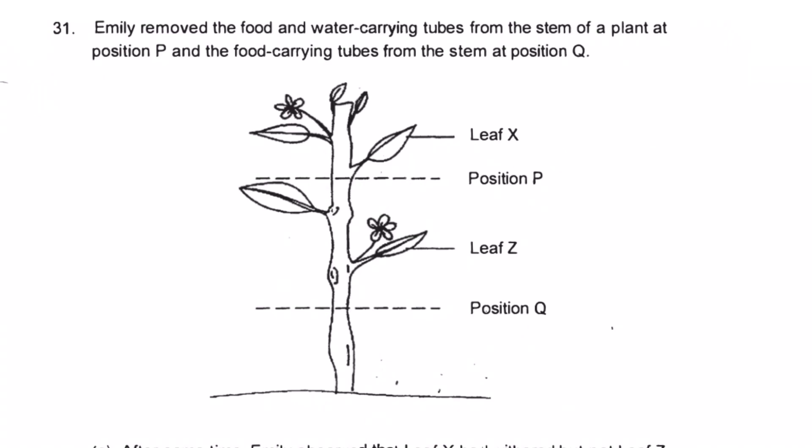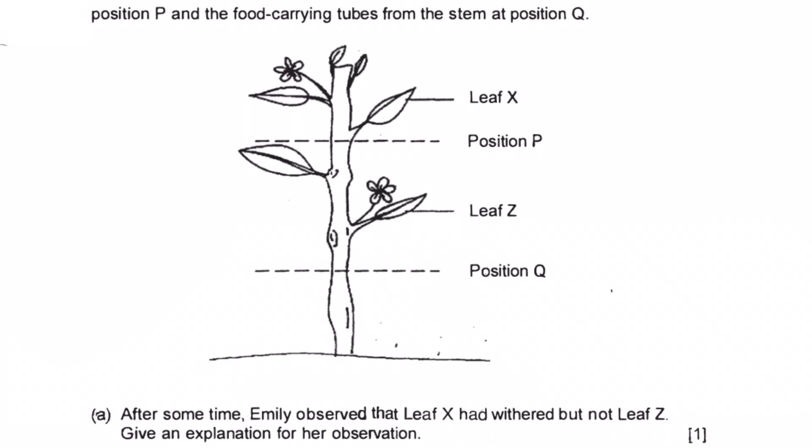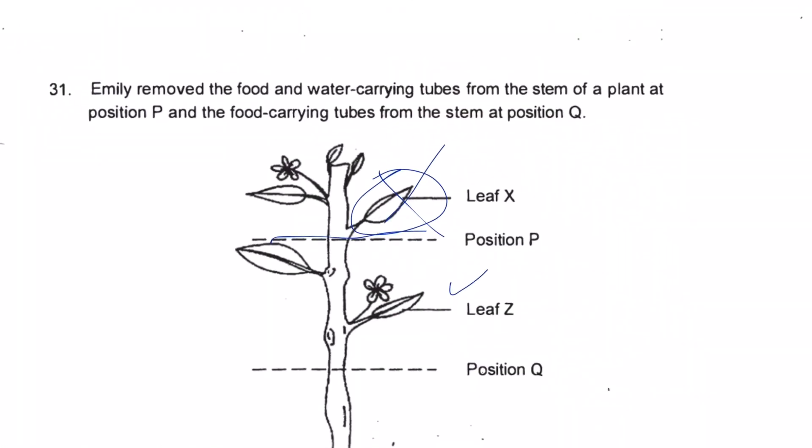Plant transport. First thing comes to your mind? Plant transport. Stems. What else? Food, food carrying tube, water carrying tube, very good. So after some time Emily observed that leaf X had withered but not leaf Z. So X withered, gone, but this one still okay. See, even got flower here. Why? How come this one died but this one is fine? So you see they cut this thing, right? They cut here but they didn't chop the whole thing. What did they do? Remove the food and water carrying tube from the stem of the plant. So here the food and water carrying tubes are gone, but the bottom, only the food. So here only remove food. What does it mean? That means can water reach the top?